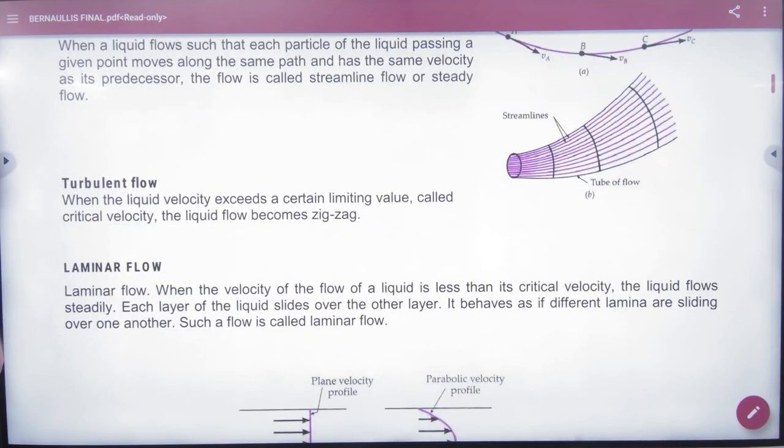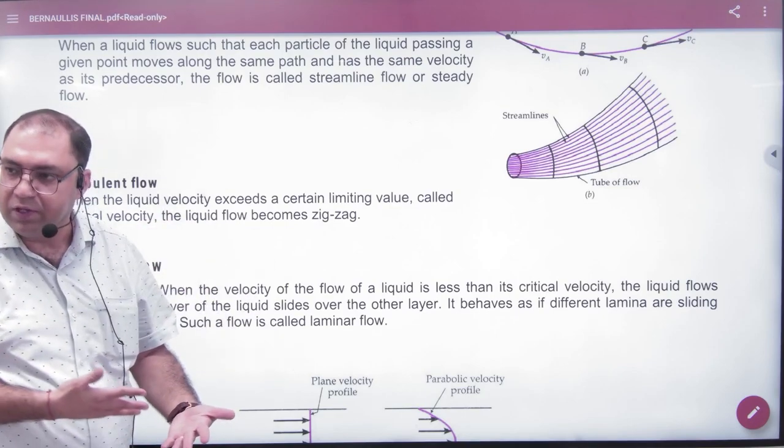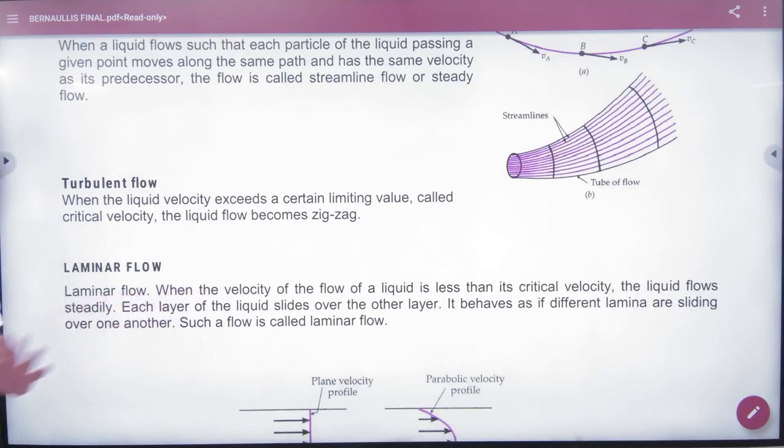Okay. So this flow, that flow when liquid zigzag moves, there is a lot of pressure. Due to the pressure, it changes the path, it can go up and down, so in this case, what is turbulent flow?